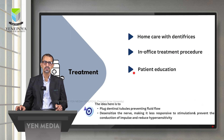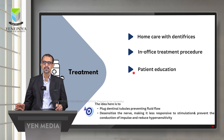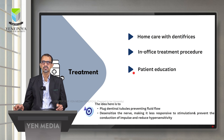Managing this common symptom involves three important aspects: home care with the use of dentifrices or toothpaste, in-office treatment procedures carried out by a professional, and patient education. The goal is to plug the dental tubules to prevent fluid flow and thereby prevent pain initiation, as well as to desensitize the nerve, making it less responsive to stimulation and preventing the conduction of impulses.